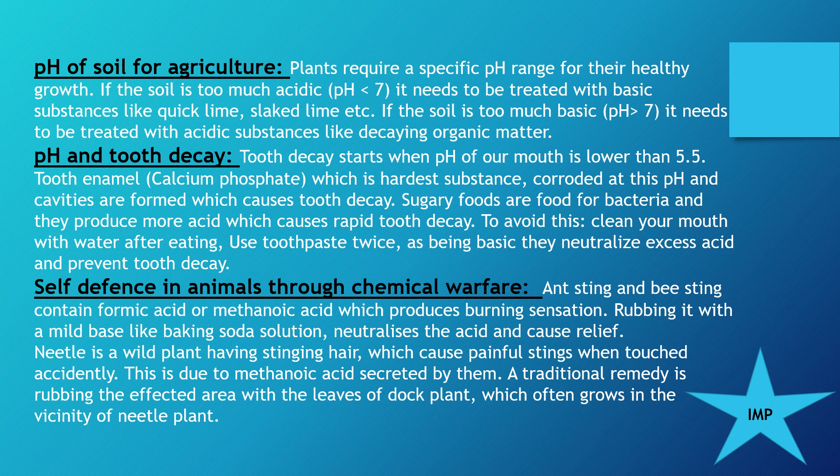The third importance of pH is in agriculture. Different plants require different pH. Sometimes the pH of the soil is too acidic — less than 7 — and it needs to be treated with basic substances like quick lime (calcium oxide) or slaked lime. If the soil is too basic — pH more than 7 — then it needs to be treated with acidic substances like manure or organic matter.